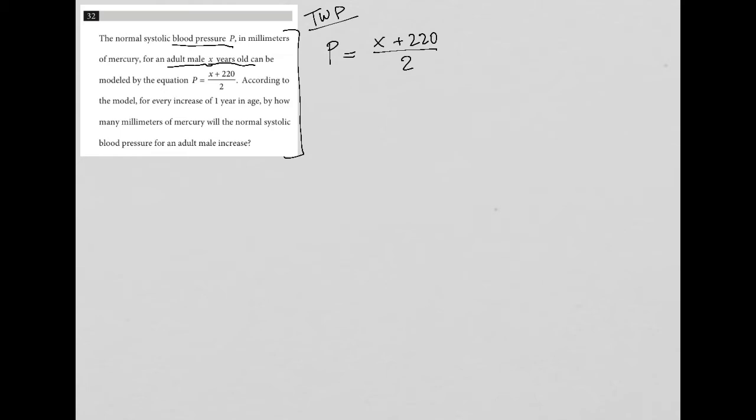Well, there's a lot of things we could do here. One thing that we can do is plug in our own number. I could say, let's say that this adult male is 25 years old. What would we expect to happen?